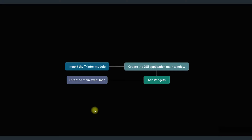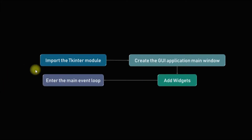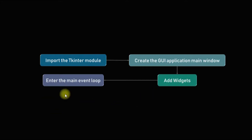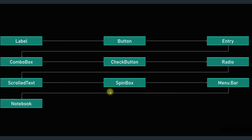Before starting to code, let's understand how we create a GUI application with the TKinter module. First we import it, then we create a main window, then we add the required widgets to the main window, and finally we enter the main event loop which allows the application to handle user interaction until the user closes the window.